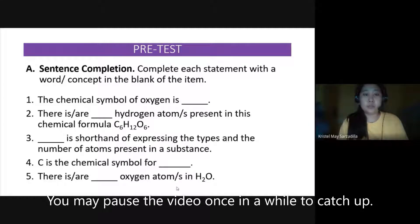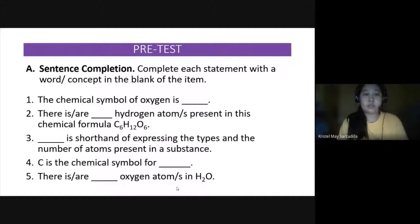You may pause this video when answering all the items. Number 1, the chemical symbol of oxygen is blank. Number 2, there is, are, blank hydrogen atoms present in this chemical formula C6H12O6. Number 3, blank is shorthand of expressing the types and the number of atoms present in a substance. Number 4, C is the chemical symbol for blank.